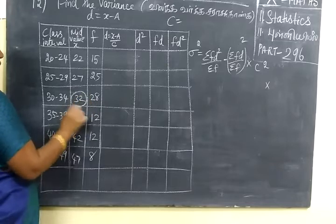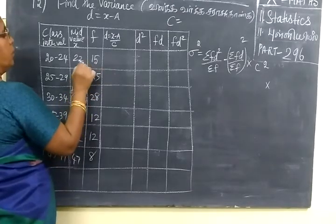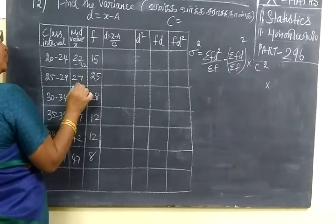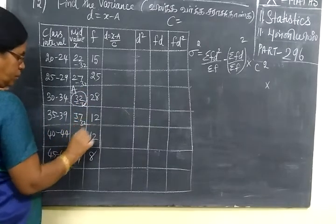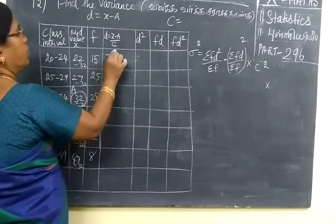Now I will put D equal to X minus A. This is the value of A. So you take this as A. So in the class, minus 32, minus 32, minus 32, minus 32.